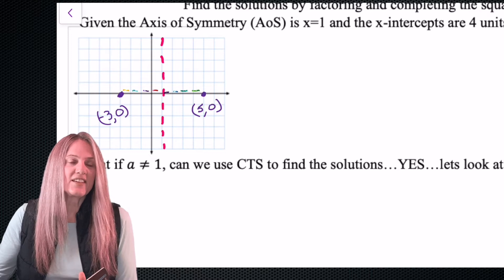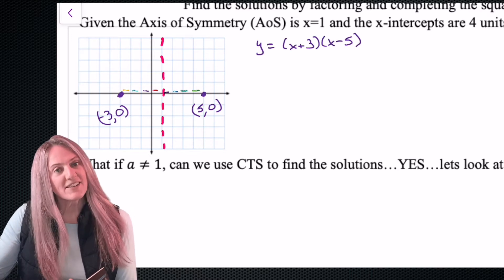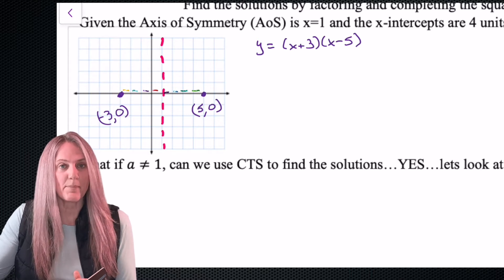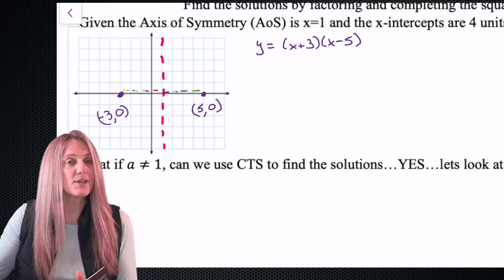Now let's take a look at this if it were in factored form. If my x-intercepts are at negative 3 and 5, then I know that inside opposite. So y equals x plus 3, x minus 5.